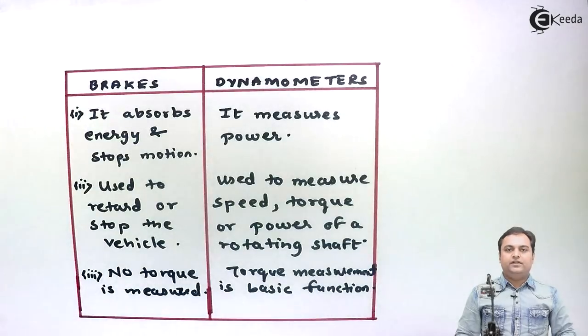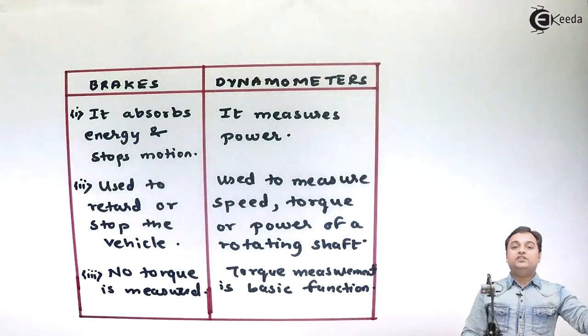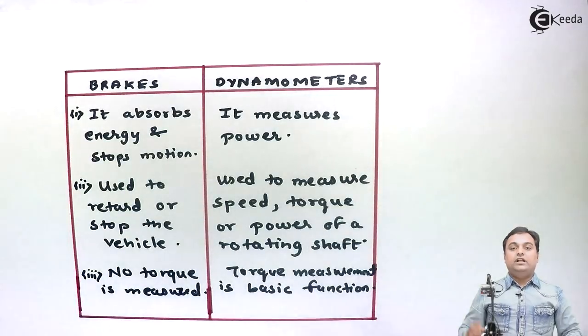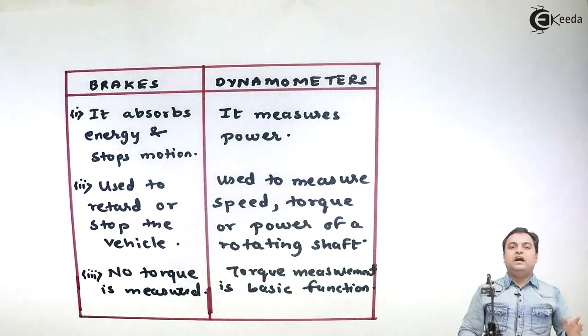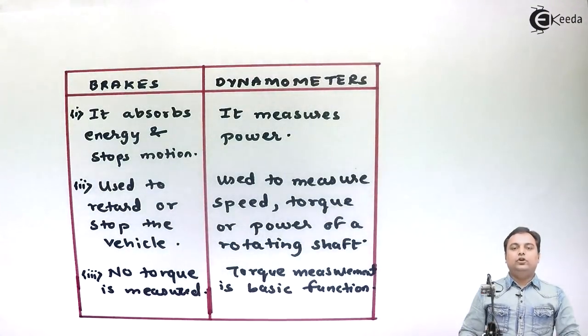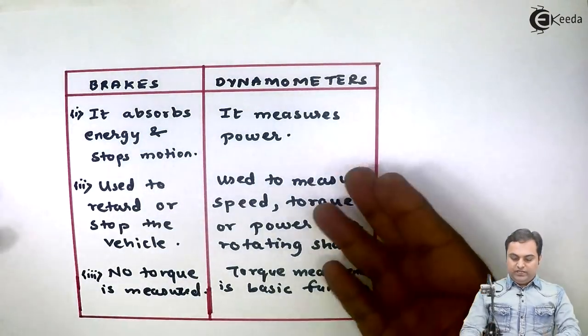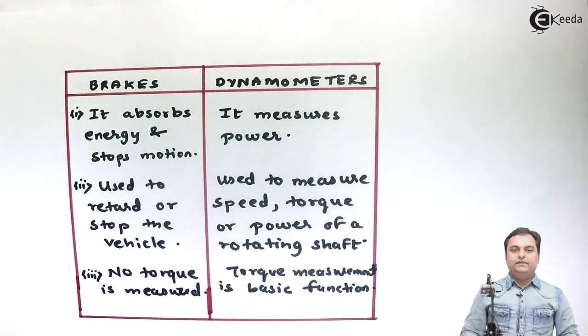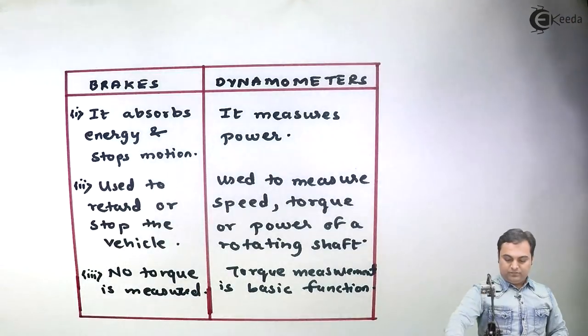Like in absorption type dynamometers, or it can measure the power without stopping the rotating shaft. So dynamometer is a power measuring device. Brakes are used to control the moving body and mostly used in vehicles. So here are some distinguishing points or the comparison between brakes and dynamometers.